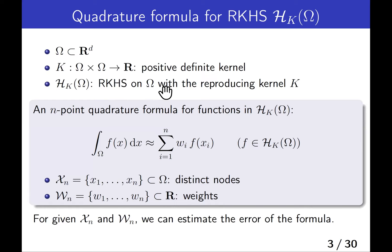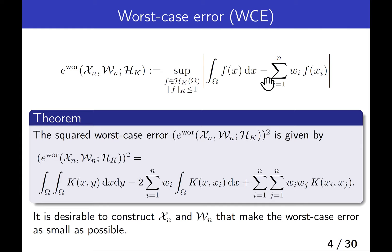An endpoint quadrature formula for functions in the space is given by this formula, where x sub n is the set of distinct nodes and w sub n is the set of weights. For given nodes and weights, we can estimate the error of the formula — that is, we can provide the worst-case error, defined by this expression, which is the norm of the error operator.